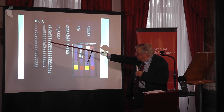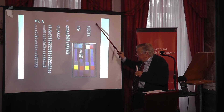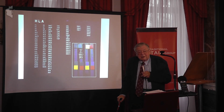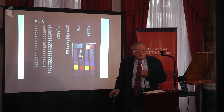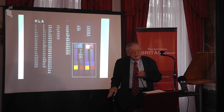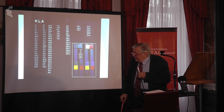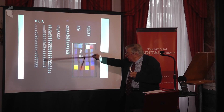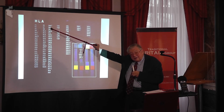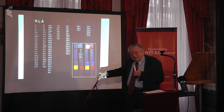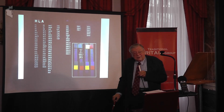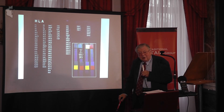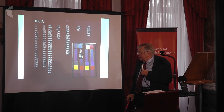Each of the letters A, B, C, etc. refers to a different gene, a different section of our genetic makeup, and each of the numbers refers to a different version of that gene. There are many, many versions — now even thousands shown here. It's a highly variable system, and all these genes — six illustrated here — occur very close together on our chromosomes, so they tend to be inherited together.